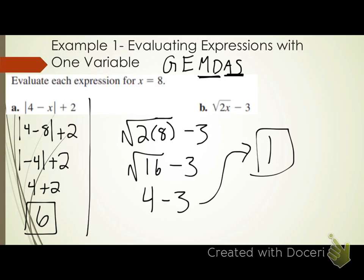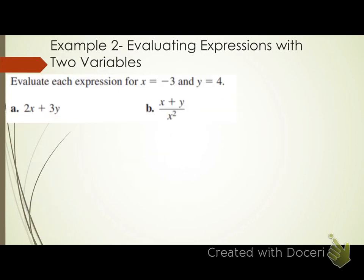So: plug in your variable, then use your order of operations to work it down. The previous examples had one variable. Now we have two variables — x and y. Evaluate each expression for x equals negative 3 and y equals 4. Letter A is 2x plus 3y. Does the process change at all since I added another variable? No — I'm still going to plug in and then use order of operations to work it down.